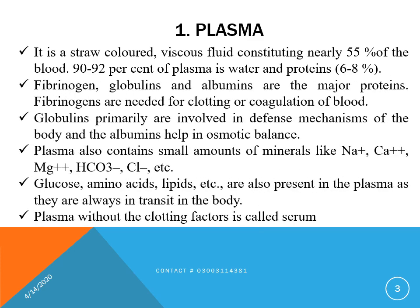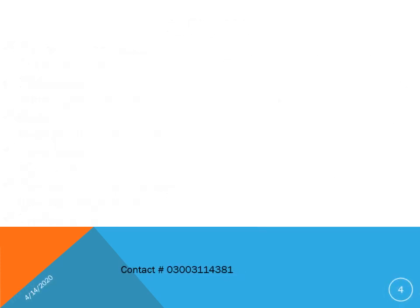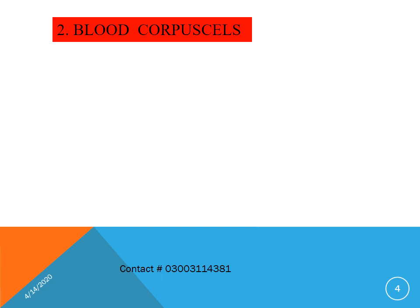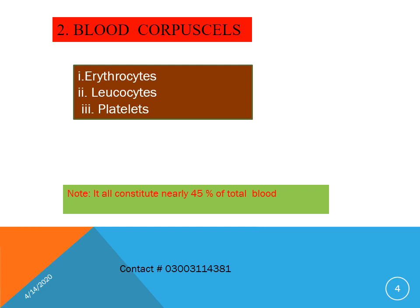Plasma without clotting factors is known as serum — that is, after removal of fibrinogen and other clotting factors, the remaining portion of plasma is known as serum. The other part of blood is the living cells, known as blood corpuscles. First are erythrocytes or RBCs. Second are leukocytes or white blood cells. Third are platelets or thrombocytes. These form around about 45% of blood.